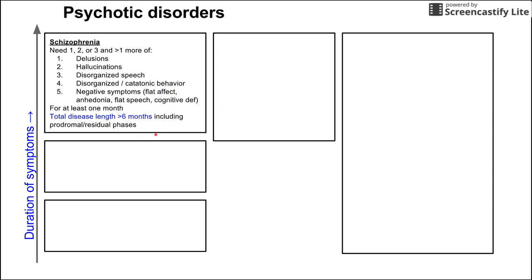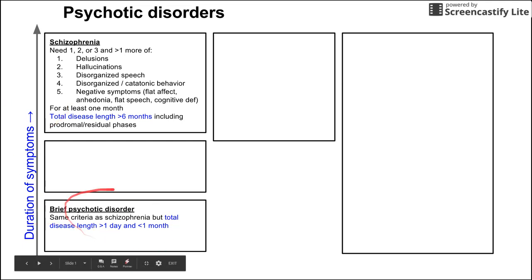Brief psychotic disorder has the same criteria as schizophrenia — you need two of those five symptoms — but the total disease length is greater than one day and less than one month. It's a much shorter time frame, and accordingly sits much lower on the duration axis.